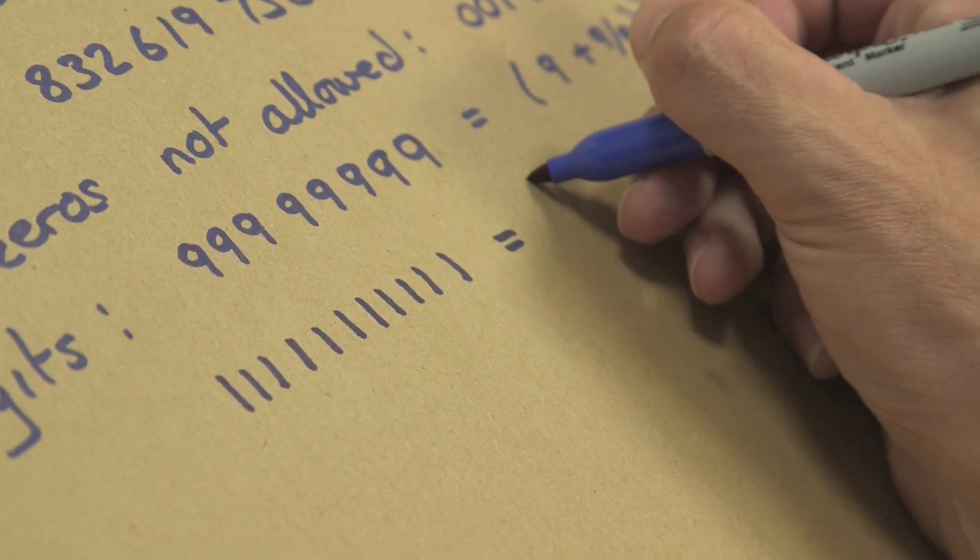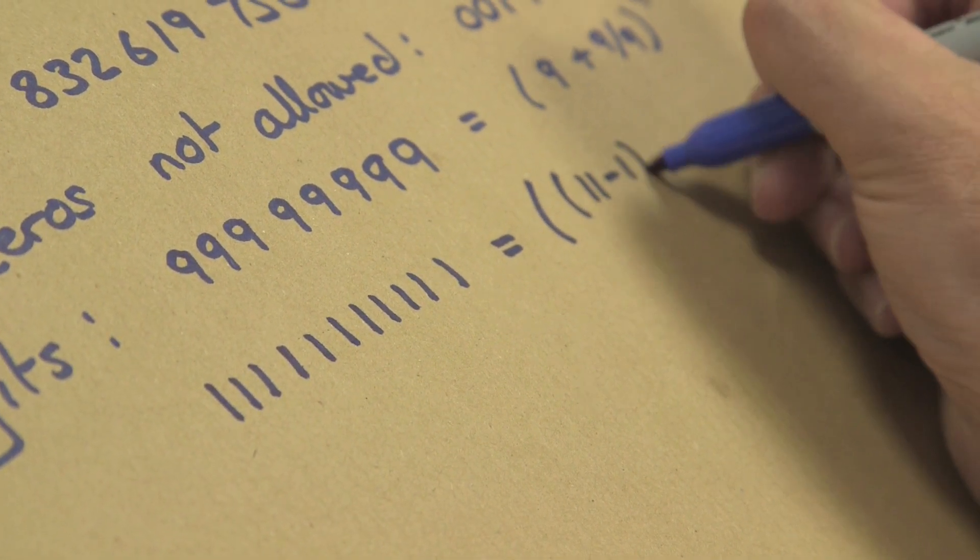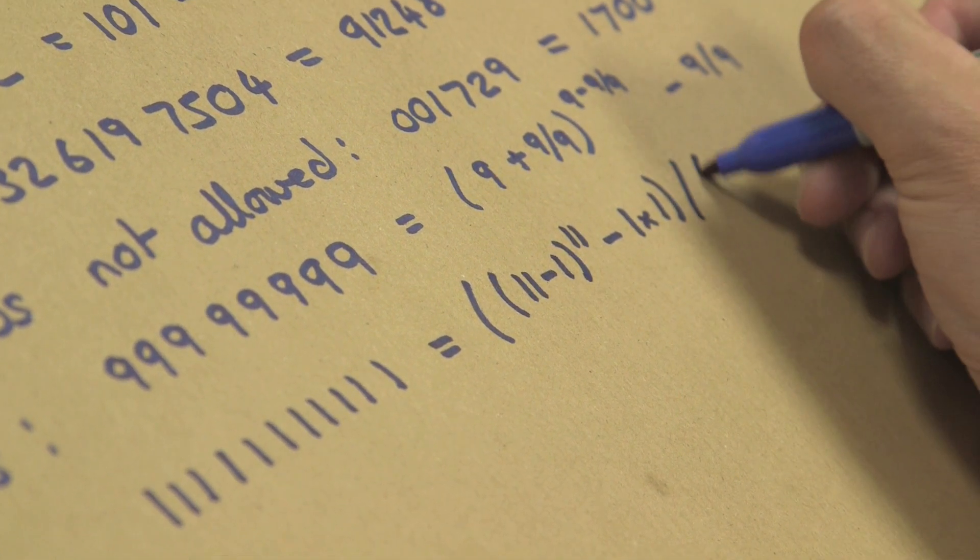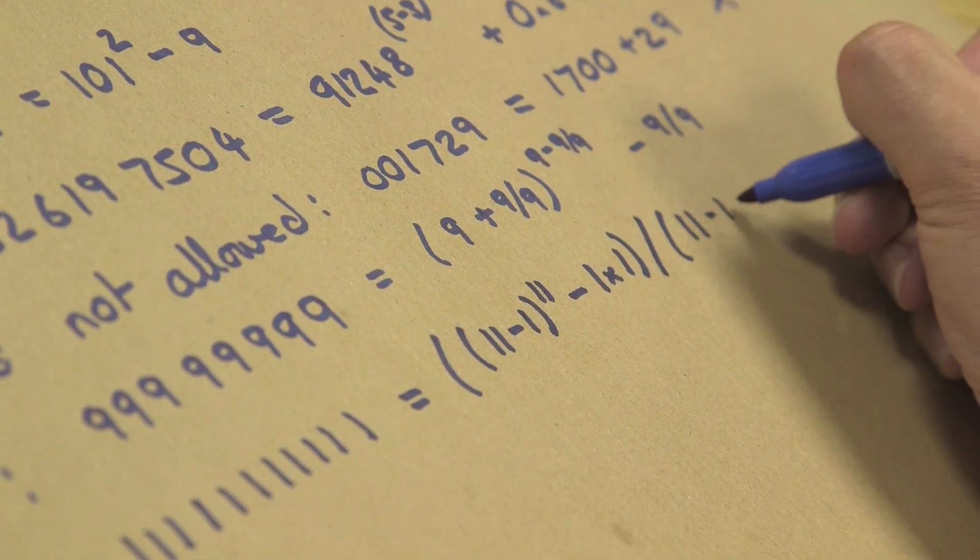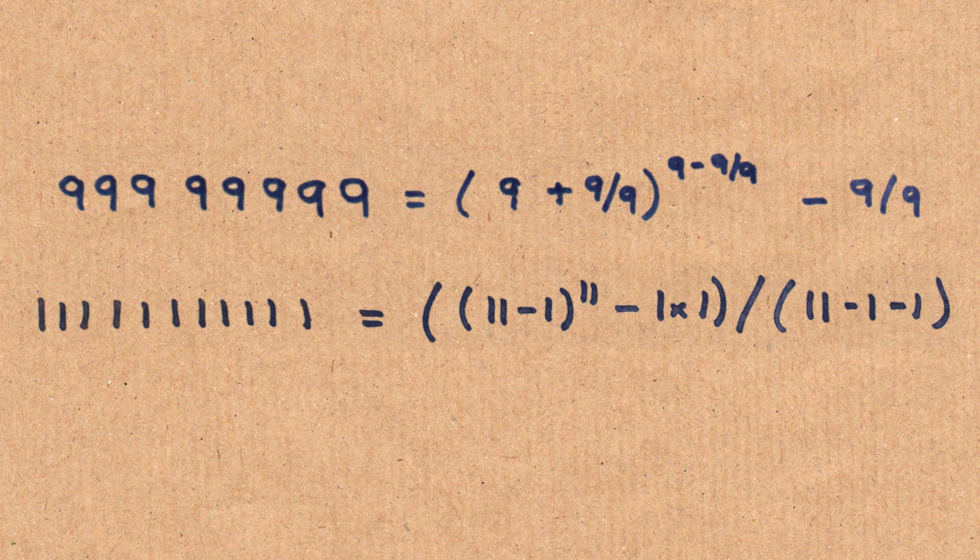And that is equal, if I've got my algebra right, 11 minus 1 to the power of 11 minus 1 times 1 divided by 11 minus 1 minus 1. So we've got the same number on the right-hand side. Why are you laughing? Because it's just cool.